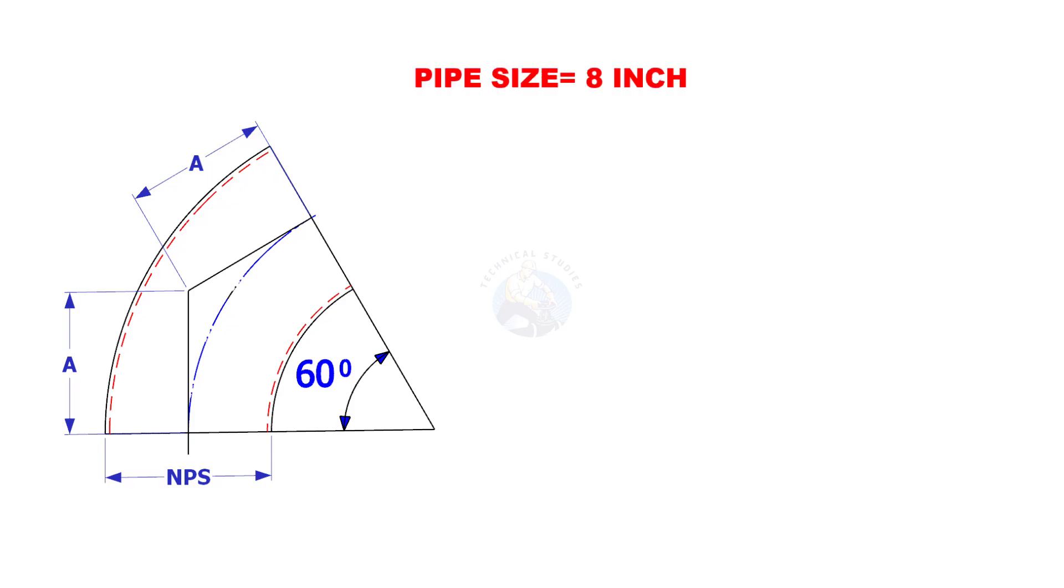This time the pipe size is 8 inches and the degree is 60. The constant for 60 degree is 22. Multiply 8 by 22. The answer is 176 millimetres.